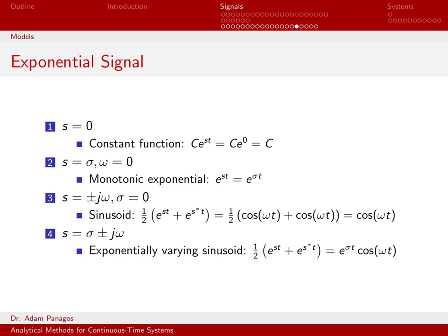In either case, we have a monotonically increasing signal or a monotonically decreasing signal. So we think of this special case when omega is 0 as a monotonic exponential.